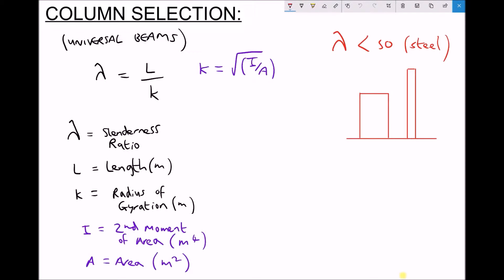In this video we're going to look at how we can use the universal beams tables in order to select columns. First we'll discuss the difference between a column and a beam, then we'll talk about how we can determine the slenderness ratio for a column before selecting an I-section beam or I-section column for a given application.